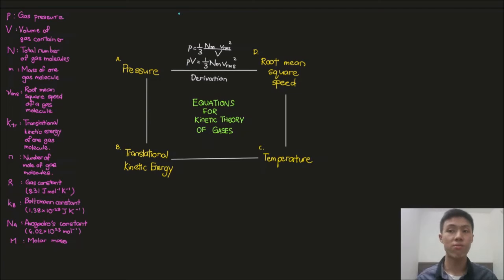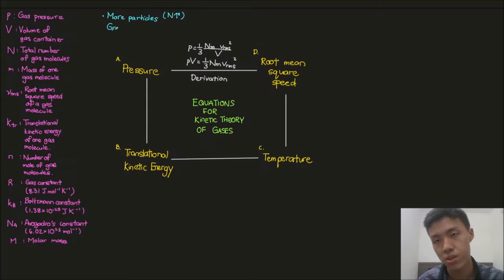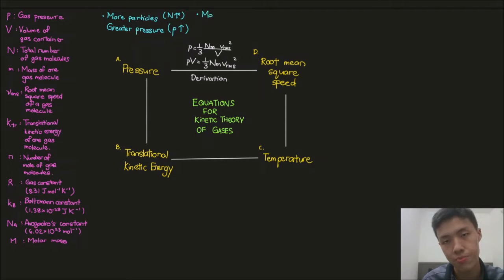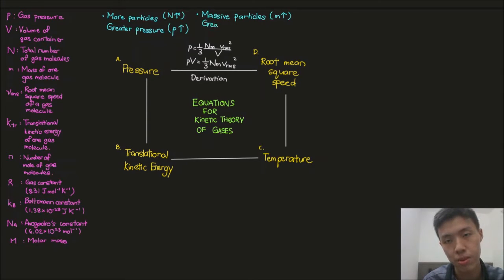What qualitative insights can we get from this equation? The first thing is: if we have more particles, we will have greater pressure. More particles is represented by an increase in N, and you will have greater pressure. You can imagine it — more particles means more collisions happening, so of course pressure increases. The second thing is: if we have massive particles — particles with greater mass — what will happen?